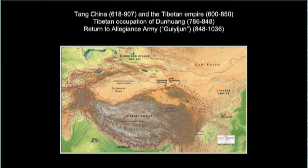Even after Dunhuang was returned to the central Chinese court at Chang'an in the mid-9th century, the Tibetan presence continued in Central Asia in several ways. The system of monastic administration that began during the Tibetan period continued even during the Return to Allegiance Army period. We also see evidence of the continued use of Tibetan script as a means of communication among the rulers of the Guiyijun and other Central Asian peoples, because Tibetan is a syllabary and could be adapted to write languages other than Tibetan. Certain iconographic templates and artistic styles first introduced during the Tibetan occupation continued into the Guiyijun period.